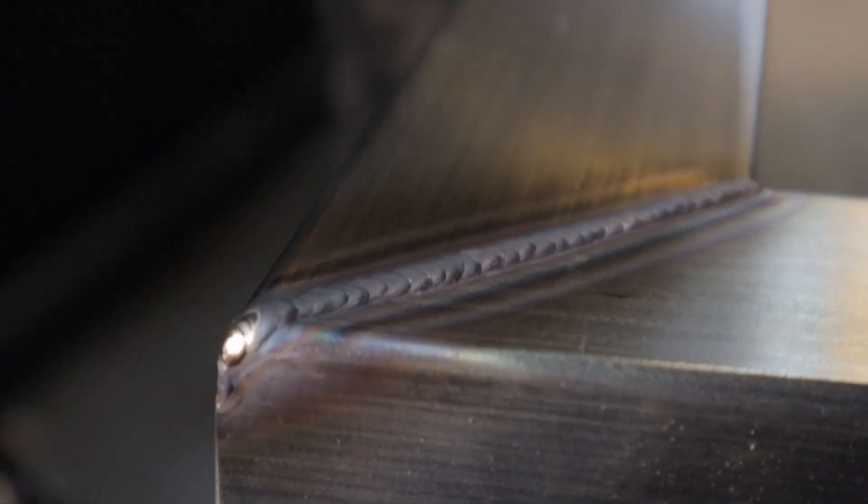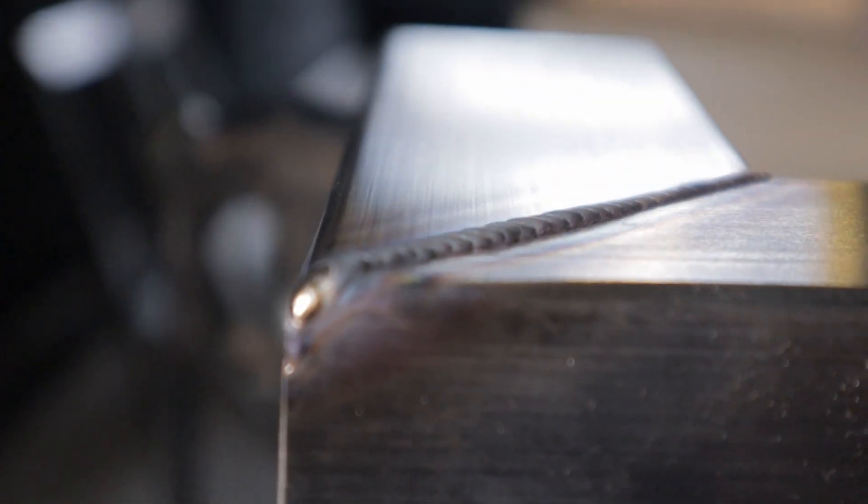I find if you weld a tube with a proud or sunken face any heat you add to it actually makes the problem even worse. Once I've finished the weld I'll have the camera low and you can actually see it sunk even further from when I started.